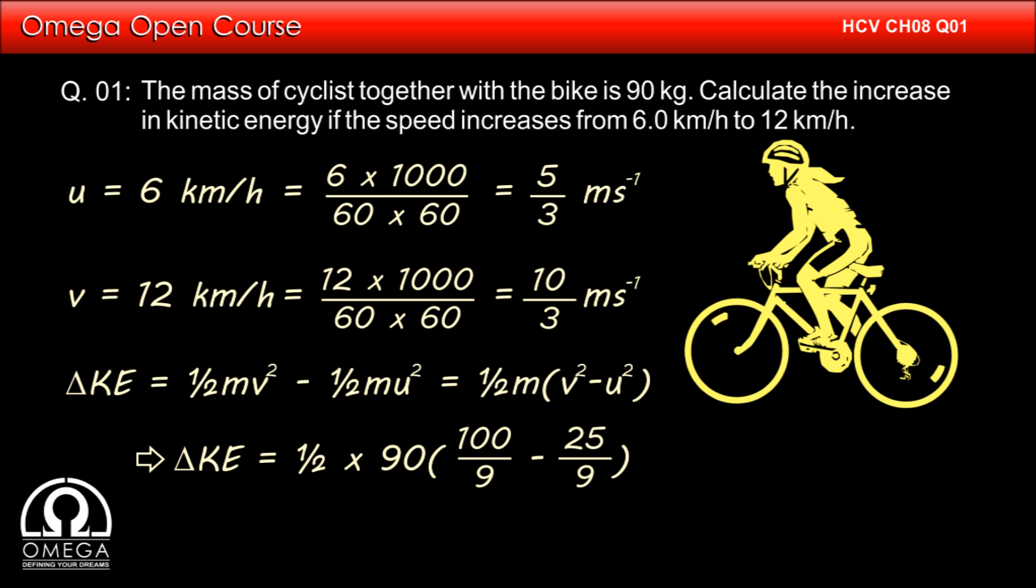Putting the values of v and u, we get ΔKE = ½ × 90 × (100/9 - 25/9).